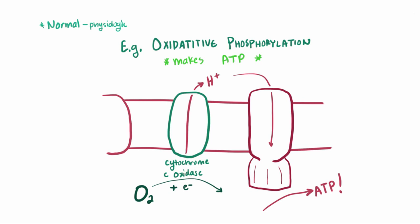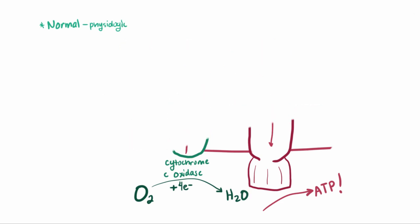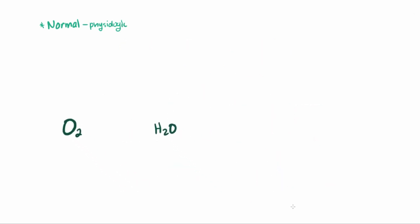So normally, for oxygen to be happy, it accepts 4 electrons and becomes water. But what if it doesn't receive all 4? Well, that, my friends, is when we get free radicals.